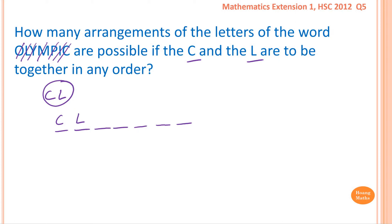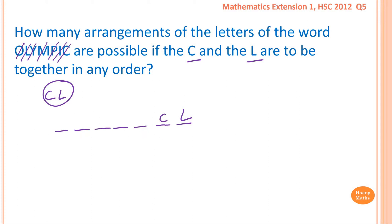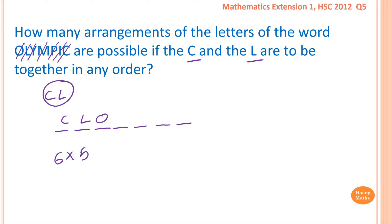C and L together can be placed in various positions. We find that C or L has one, two, three, four, five, six — six choices for placement. Once C and L occupy their position, the next letter can go in one of the remaining five spaces. So the first option is six, and the next letter has five choices.